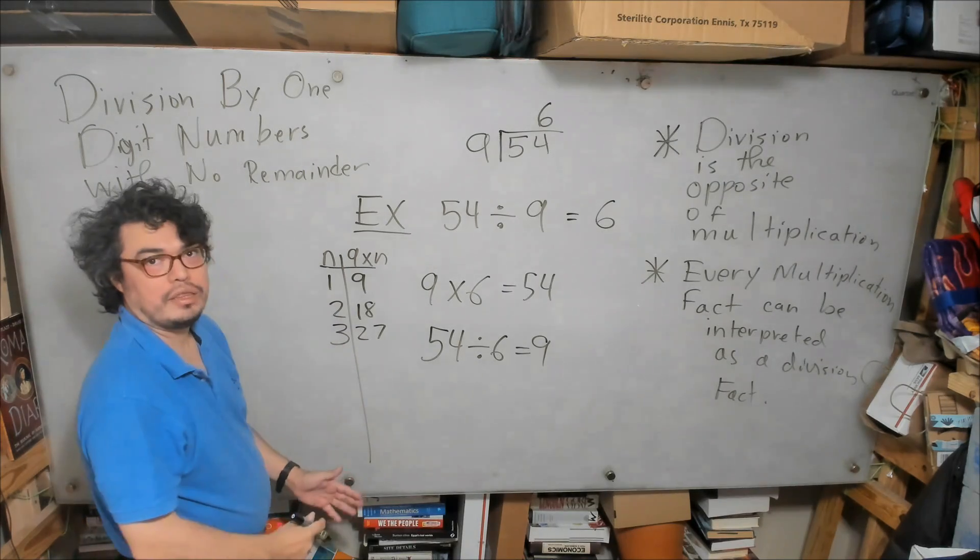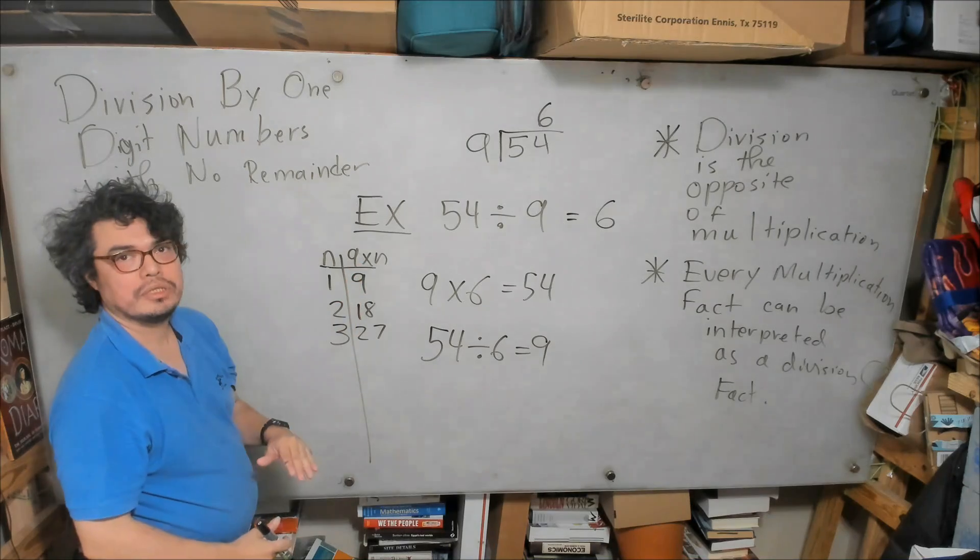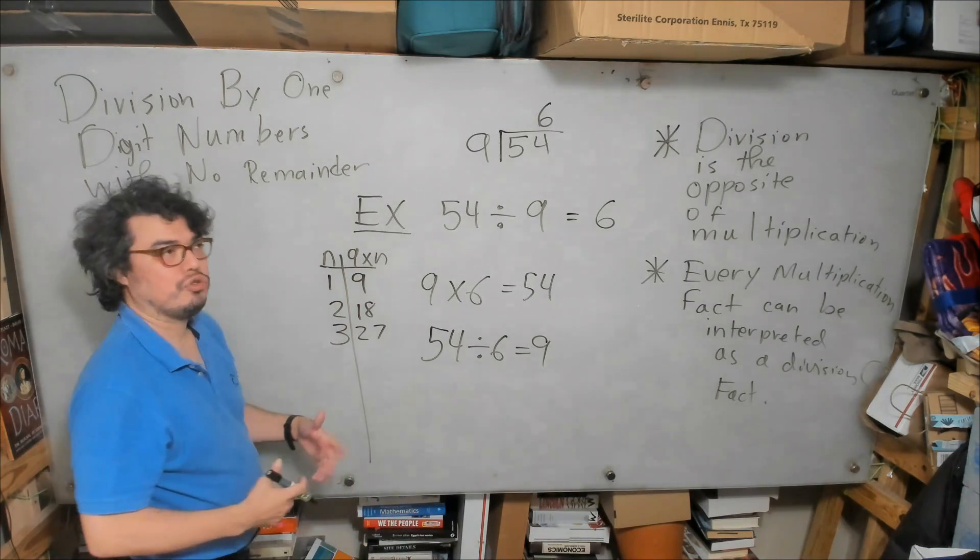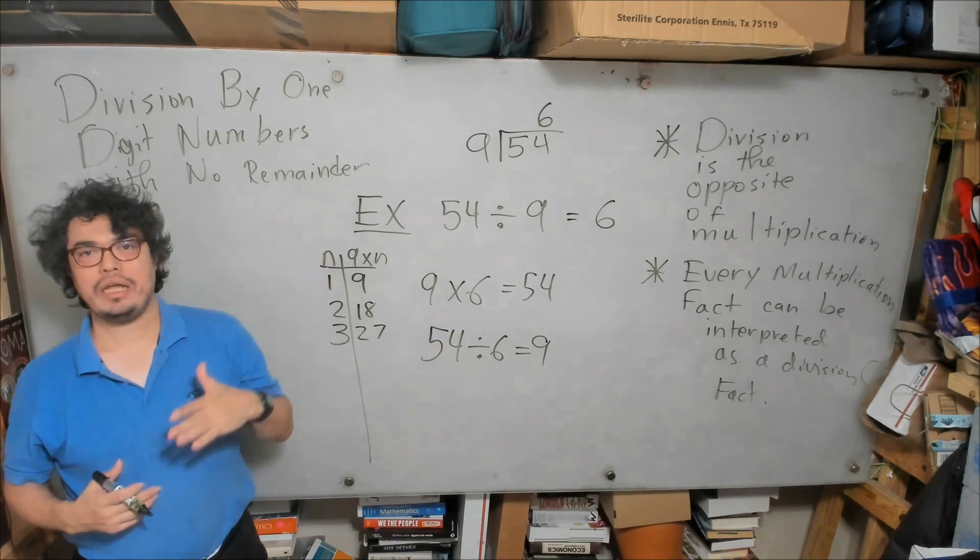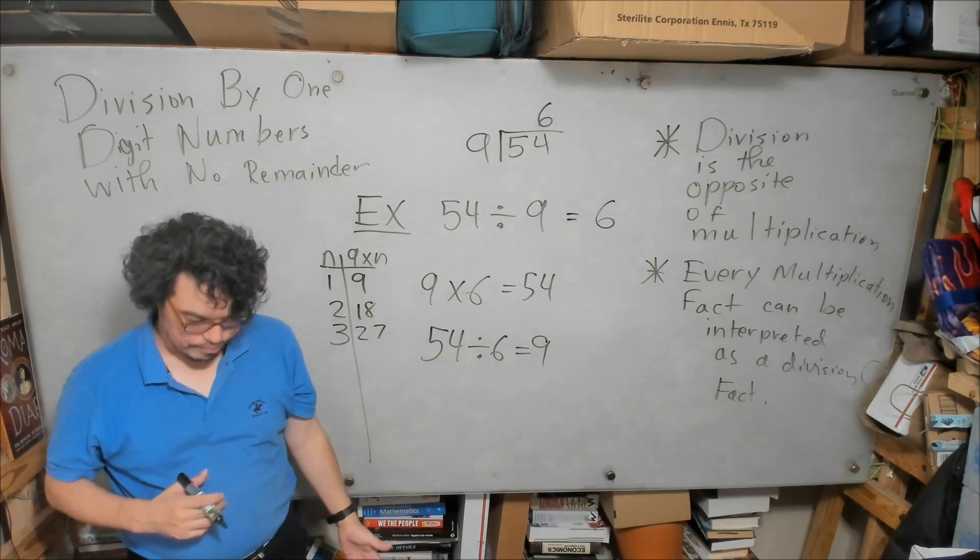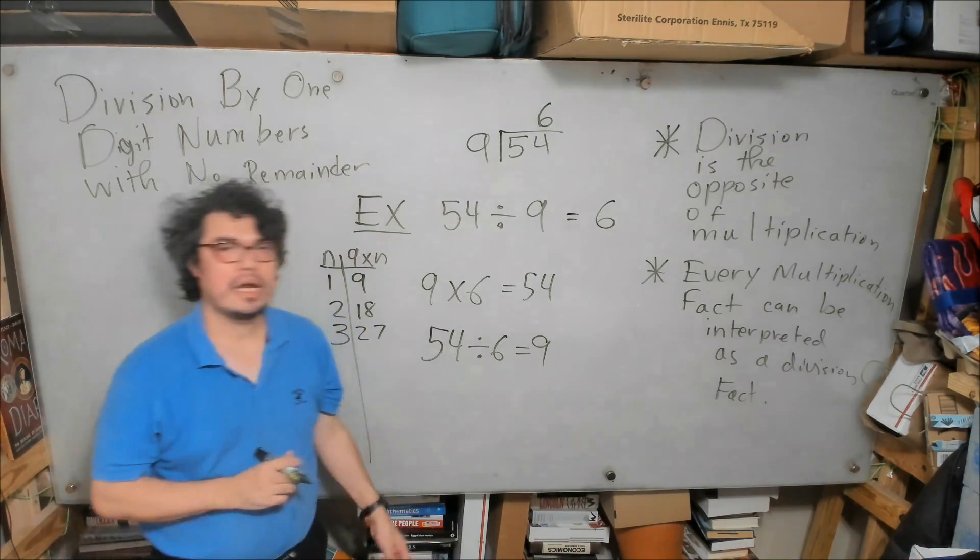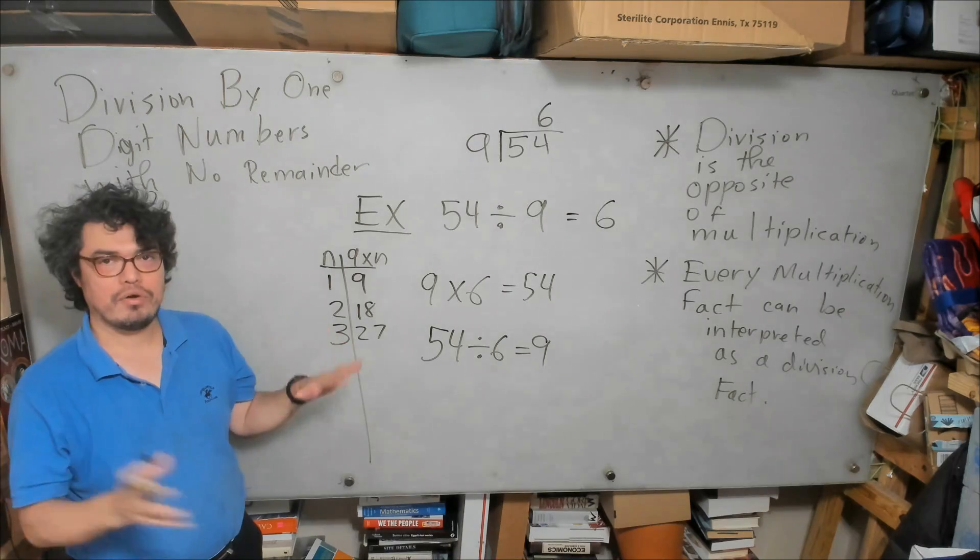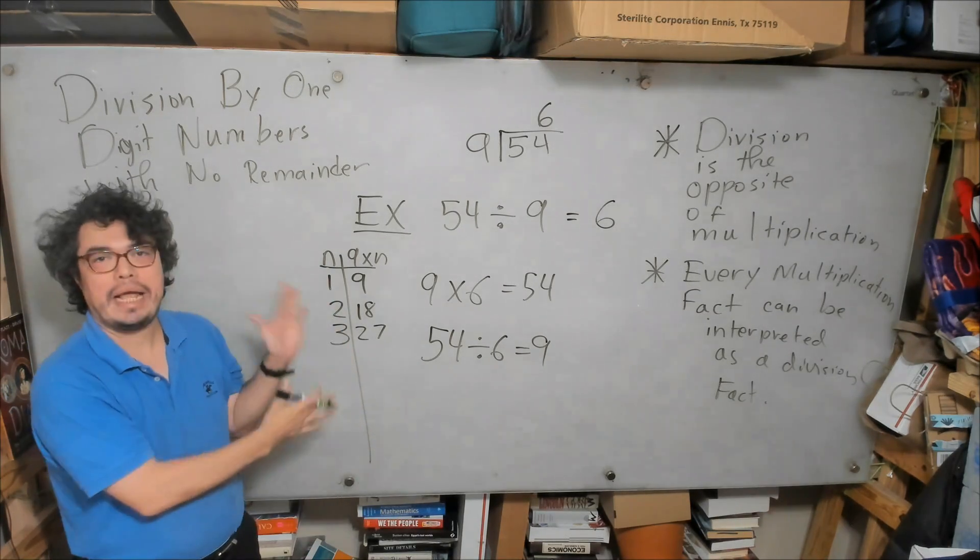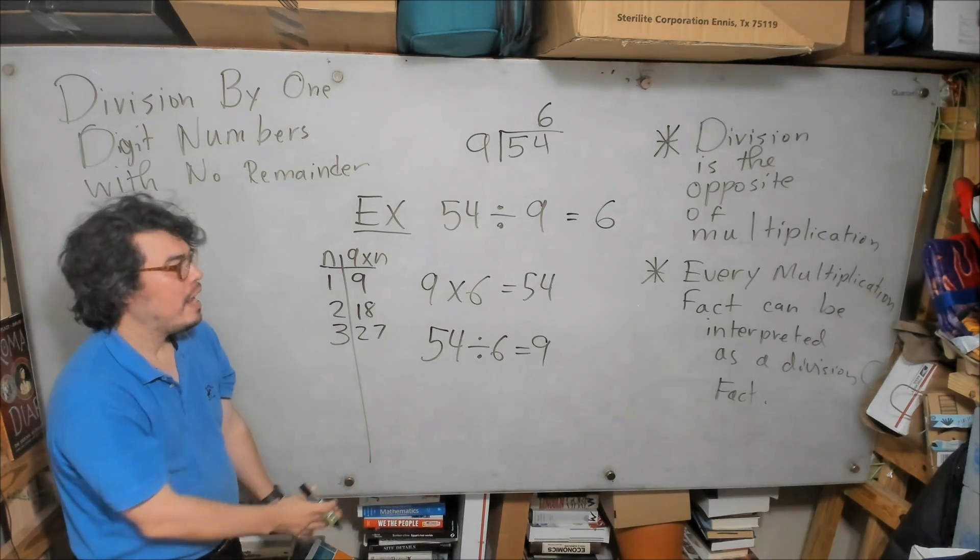And usually, the goal is to memorize the multiples of a number, of the small numbers, up to 12. So for example, you should know from 9 times 1 equals 9 all the way to 9 times 12 equals 108. But of course, if you're stressed out in the moment, if you blank out whatever, just make your multiplication table on the paper and then use it.